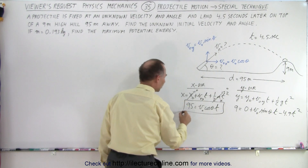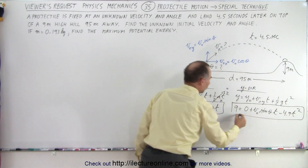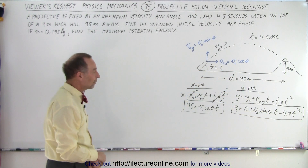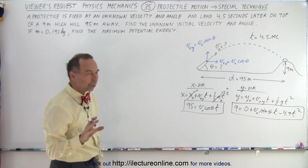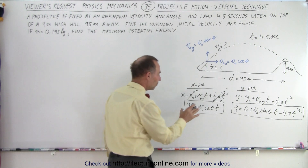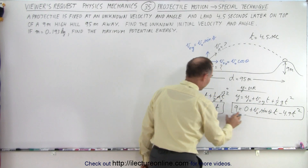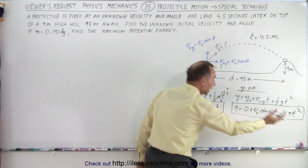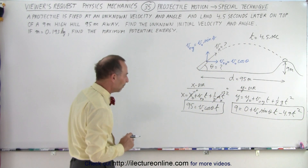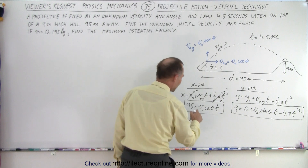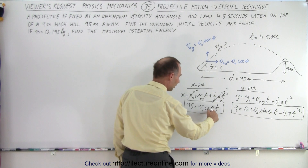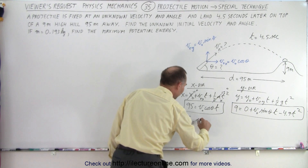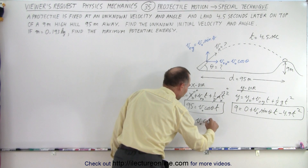Here are the two equations derived from the first equation of kinematics — one for y and one for x. We're going to solve both equations for v-initial·cos(θ) and v-initial·sin(θ), getting everything else on the other side. For the x equation, we simply divide both sides by t and get: 95 divided by t equals v-initial times cosine of theta.